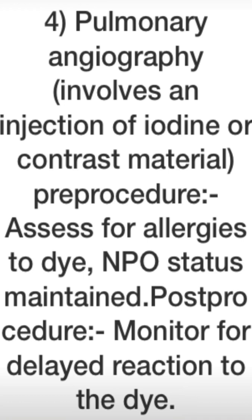Next is pulmonary angiography, which is a visualization of the pulmonary blood vessels to see if there is any abnormality or problem. This involves an injection of iodine contrast — a radiopaque material. Obtaining consent is very important, and we also need to ask about allergies to dye or seafood. We also maintain NPO status.